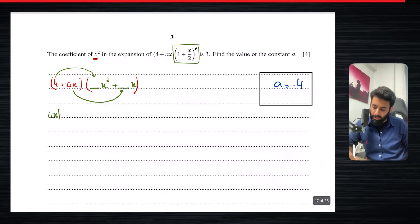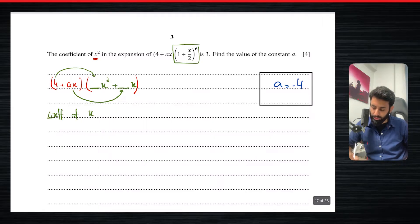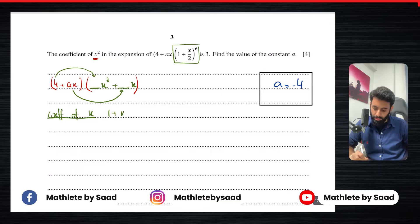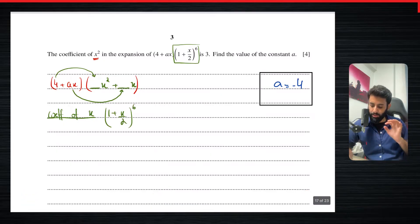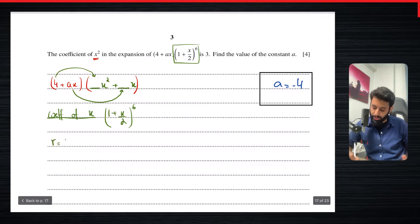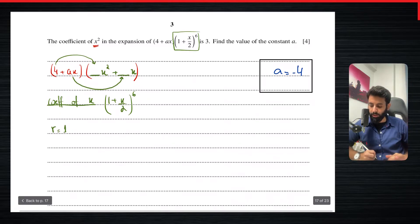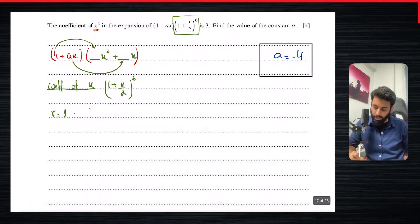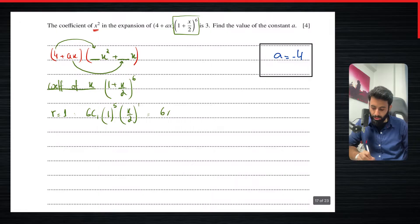Since we want the coefficient of x, let's find that first from (1 + x/2)^6. Since we have x in the second term and want the coefficient of x, we set r = 1. So we get 6C1 × 1^5 × (x/2)^1. That gives us 6 × (x/2), which equals 3x. So the coefficient of x is 3.